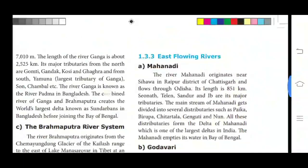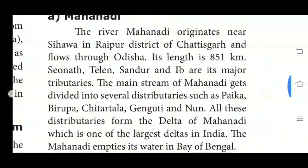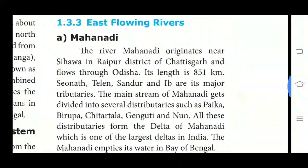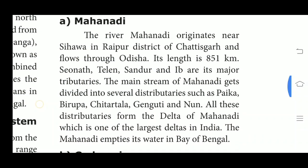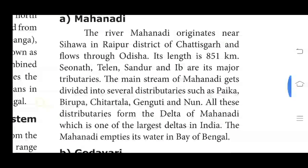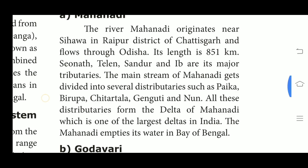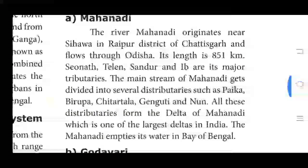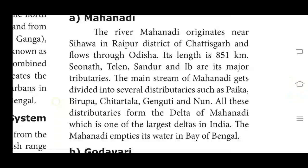The first east flowing river is Mahanadi. The river Mahanadi originates near Sihawa in Raipur district of Chhattisgarh and flows through Odisha. Its length is 851 km. Seonath, Telen, Sandur and Ib are the major tributaries.